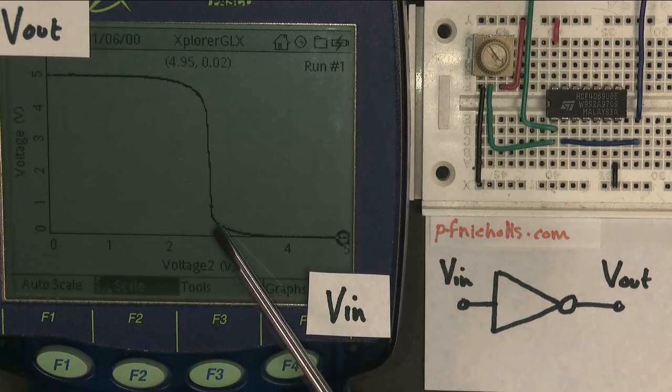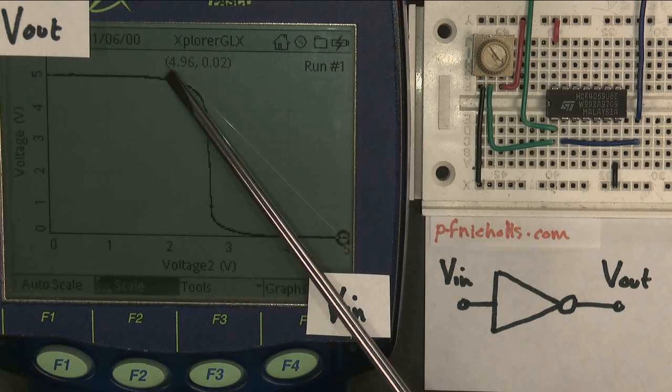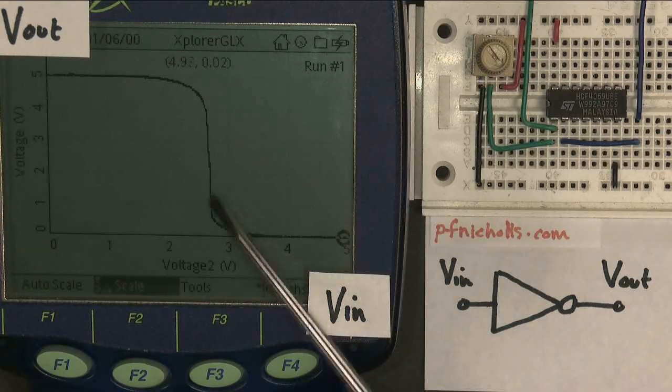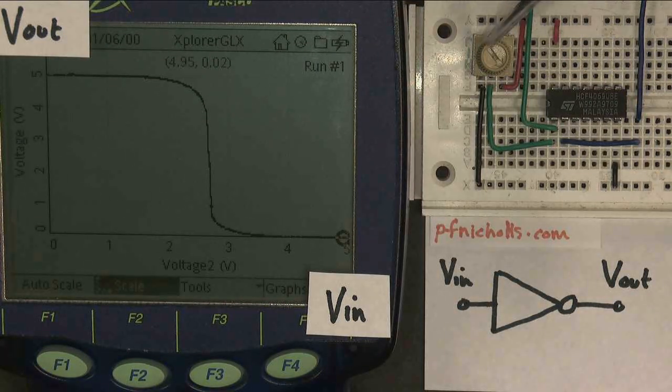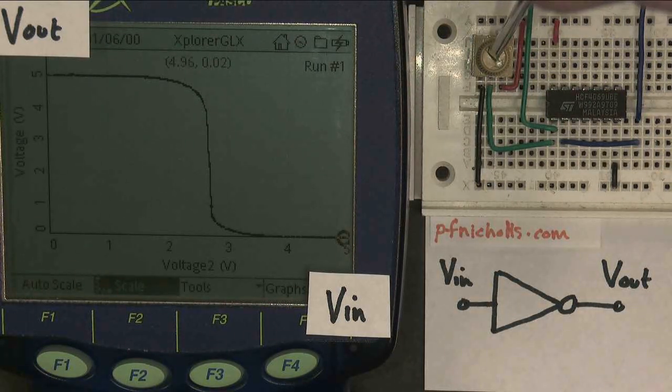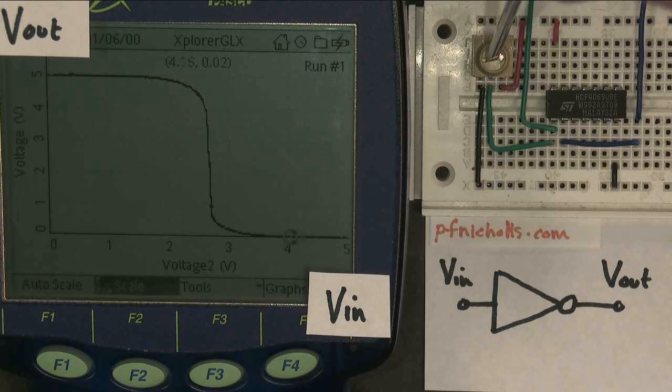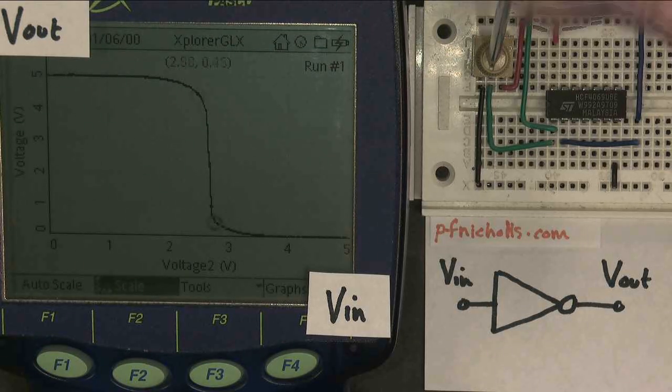But in this region from here to here, this region of the graph, the output was undetermined. It was somewhere between logic 1 and logic 0. And if we go back the other way, we see the same thing happening.